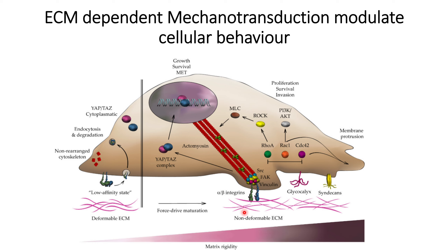However, when cells are under non-deformable ECM, or when matrix rigidity increases, we can see that integrins can form a bond with the non-deformable ECM or extracellular matrix. That will trigger mechanotransduction forces within the cells. For example, vinculin interacts with the intracellular part of the integrins, and also SRC and FAK form a complex that will lead to the polymerization of the cytoskeleton or actin. At the same time, it will also lead to YAP/TAZ complex formation.